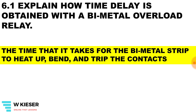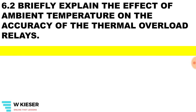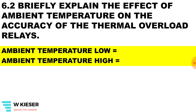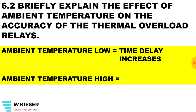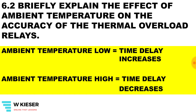Explain how time delay is obtained with a bi-metal overload relay. It is the time that it takes for the bi-metal strip to heat up, bend out of shape, and trip the contacts. Briefly explain the effects of ambient temperature on the accuracy of a thermal overload relay. Where the ambient temperature is low, the time delay increases. Where the ambient temperature is high, the time delay decreases.